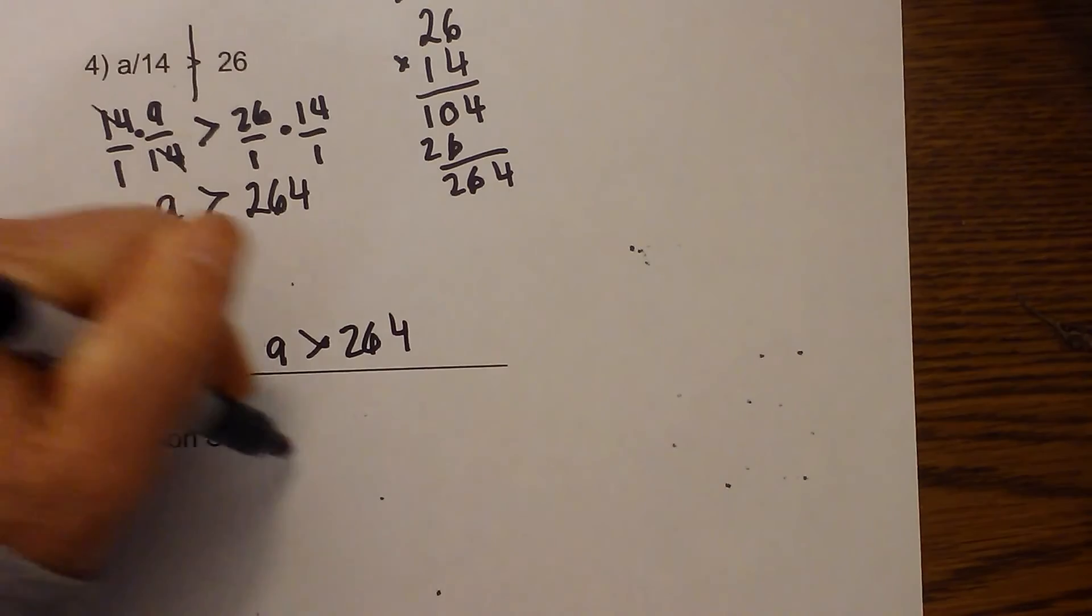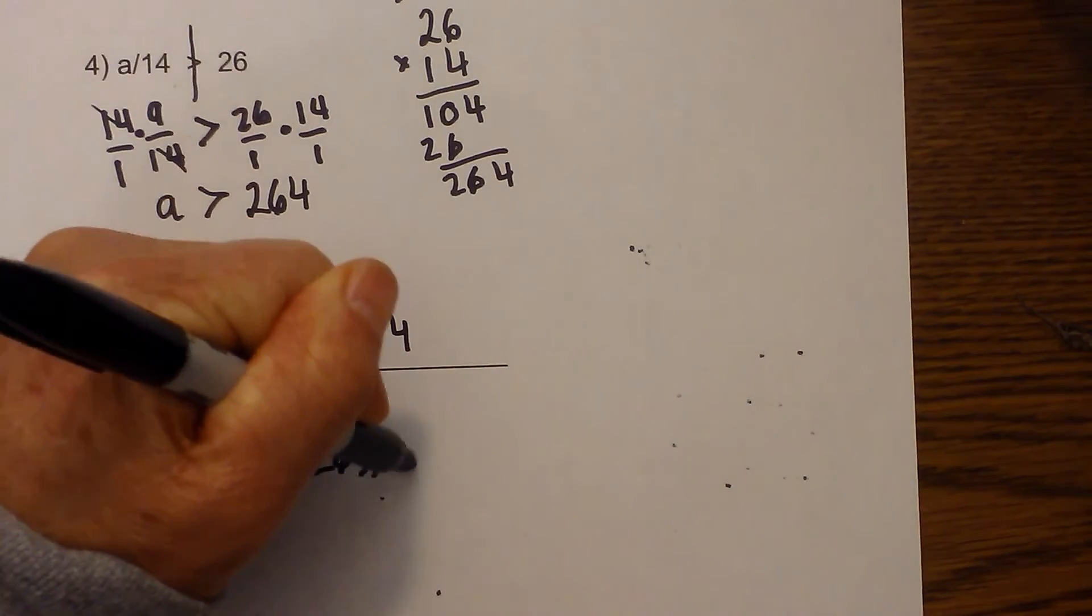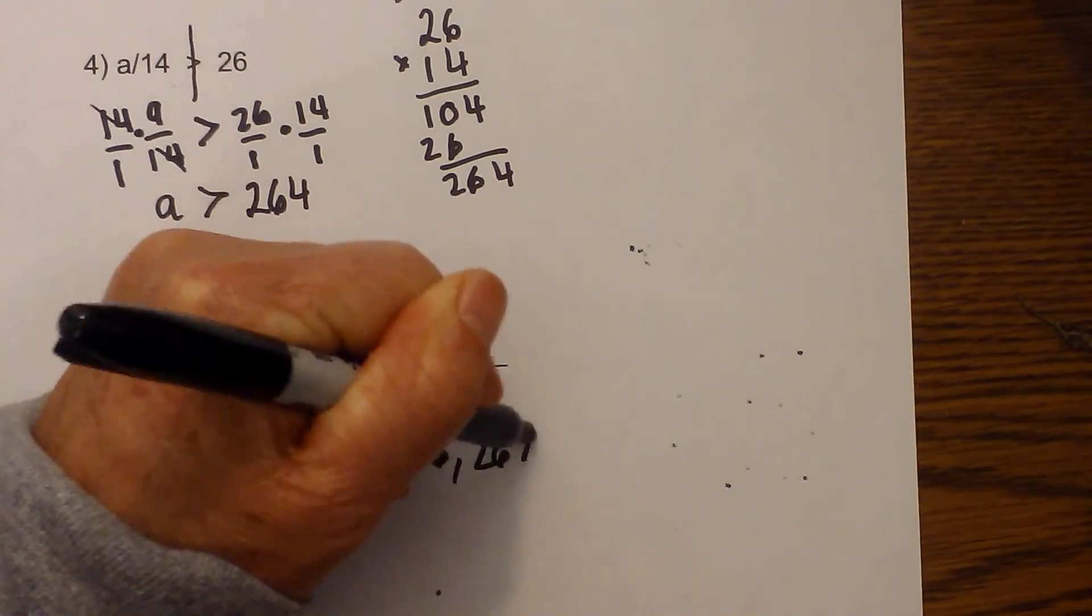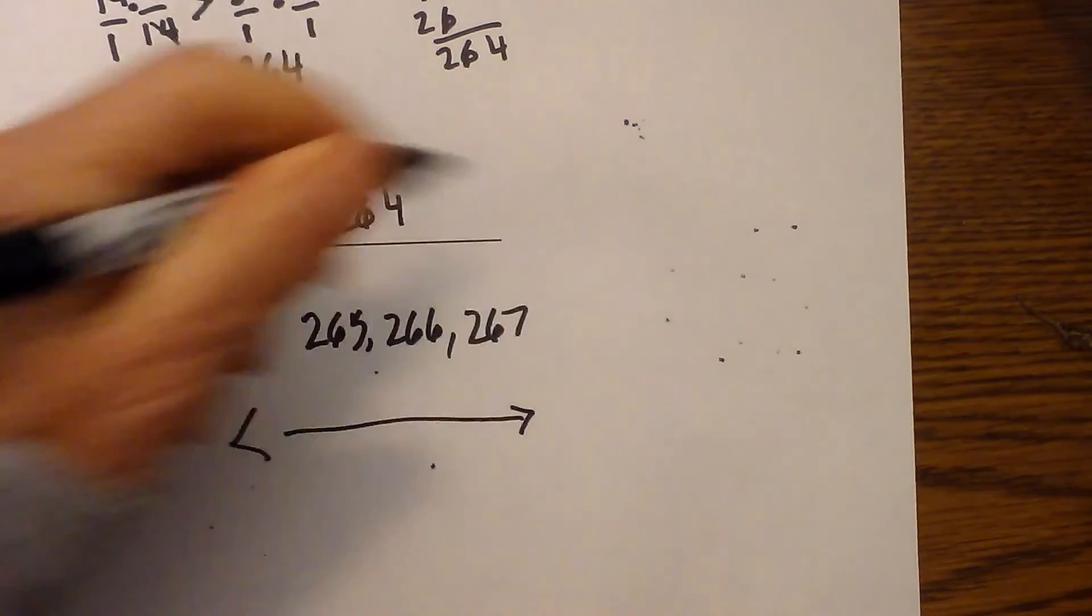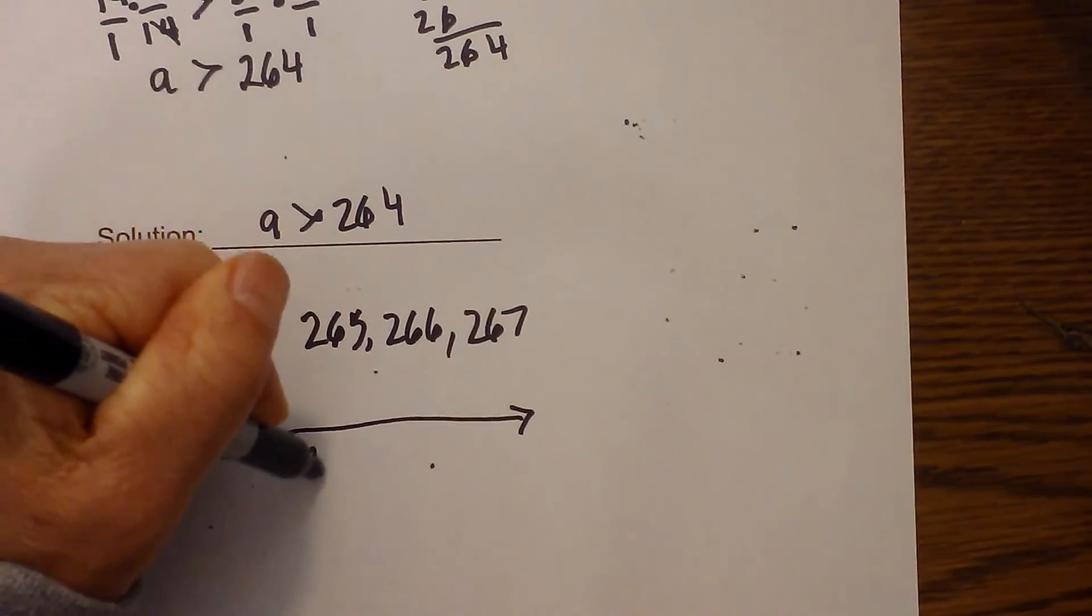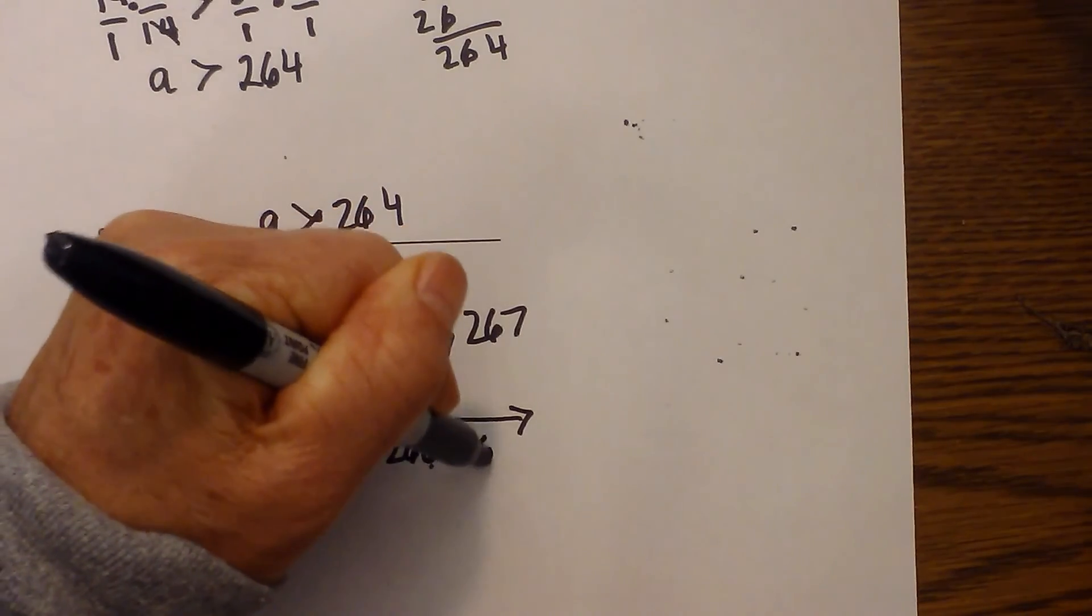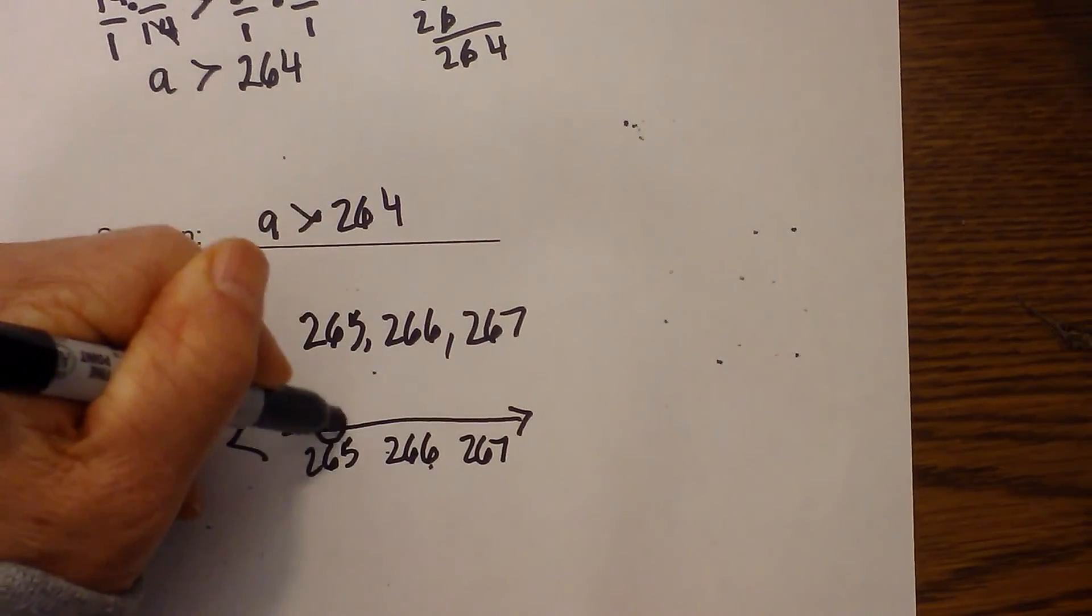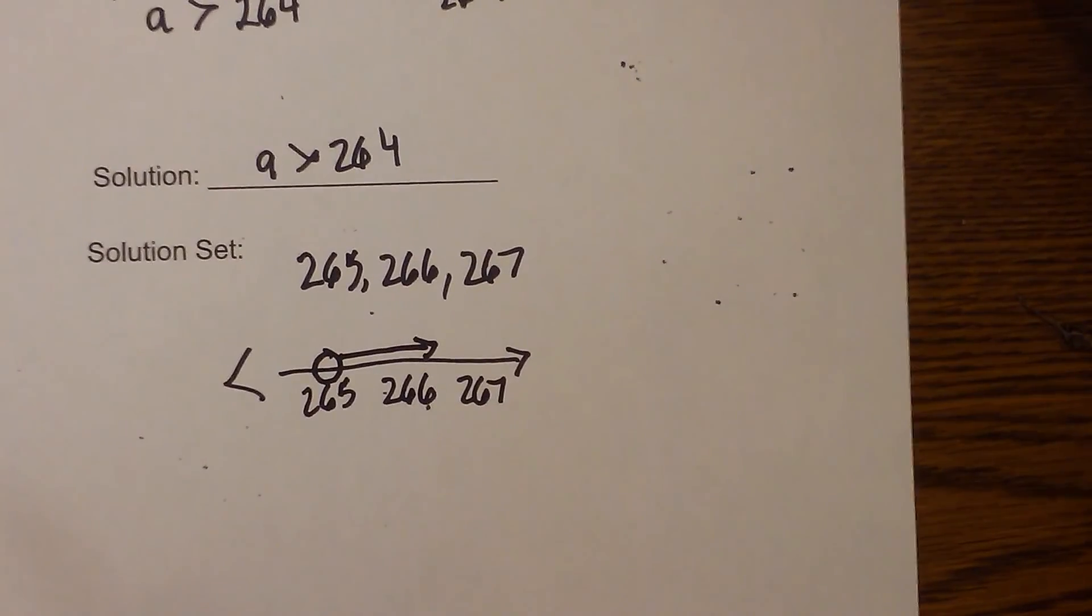The solution set will be 265, 266, 267. And on a number line, a very crude number line, we would have 265, 266, 267. And this time I keep the dot open telling me that 265 is not included.